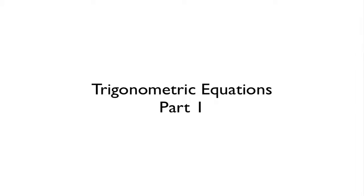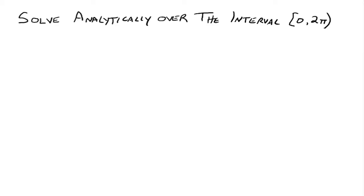This is part one on solving trigonometric equations. I've got a few examples here. The directions: we want to solve the following equation analytically over the interval 0 to 2 pi. So we're looking for all the real numbers between 0 and 2 pi that make this equation true.